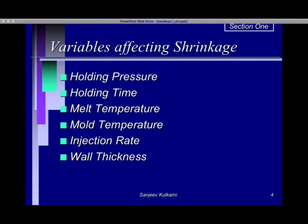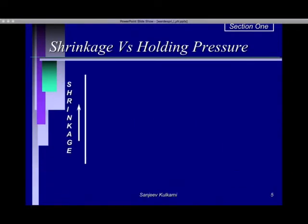There are six important variables affecting shrinkage: holding pressure (or packing pressure), holding time (or packing time), melt temperature, mold temperature, the rate of injection at which the molten material is injected into the mold, and the wall thickness of the part. Let us understand the effect of each and every variable on shrinkage.